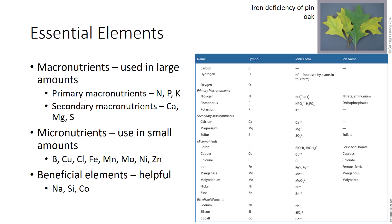They are divided into primary and secondary macronutrients. The other 8 nutrients listed in the table are labeled micronutrients or trace elements because they are used in small amounts. The term micronutrient does not, however, mean the elements are unimportant.